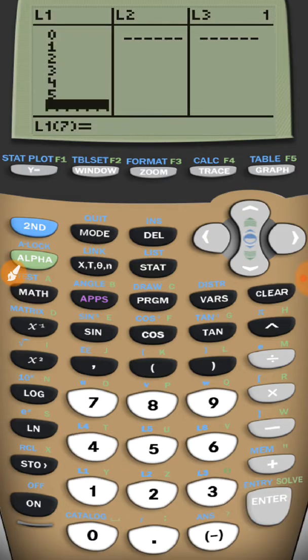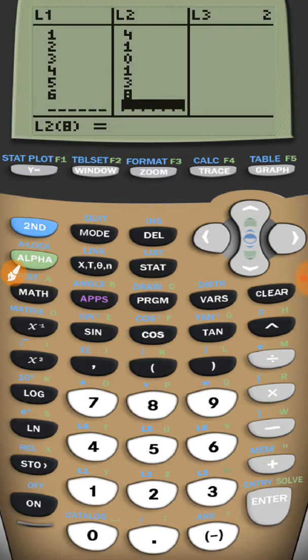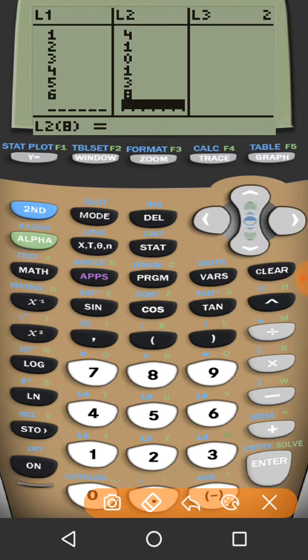So whatever data you have, you want to type that in here. I'm going to go ahead and type in some data that I just made up. 5, 9, 4, 1, 0, 1, 3, 8. Alright.